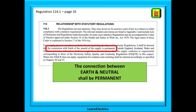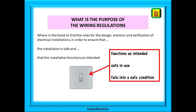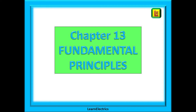This is why we say that electrically they are connected together back at the transformer. Moving on to chapter 12, object and effects, found on page 17 — this is a very short section that answers the question of what is the purpose of the wiring regulations. It tells us where in the book to find the rules for the design, installation, erection, and verification of electrical installations, in order to ensure the installation is safe and functions as intended. It does not go into detail; it simply tells us that the rules will be found in chapters 3 to 7.